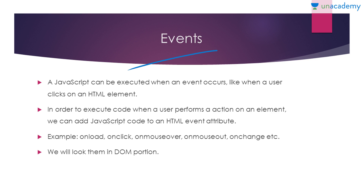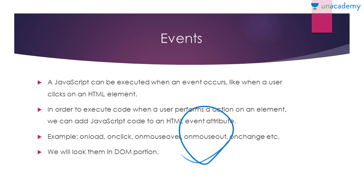For example, as soon as the page loads, that is an event — we use 'onload' for that. When a user clicks on something, we use the 'onclick' event. When someone puts a mouse over an element, we use 'onmouseover', and when they move the mouse out, we use 'onmouseout'. There are many events in JavaScript and we will look at events more in depth when we study the DOM — the Document Object Model.